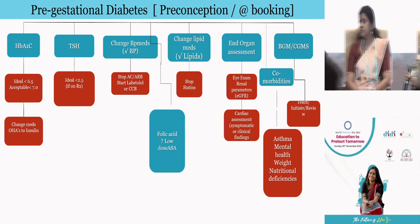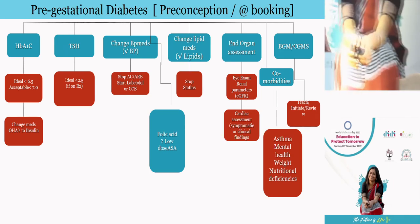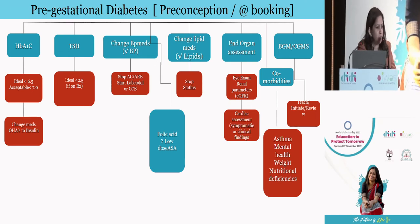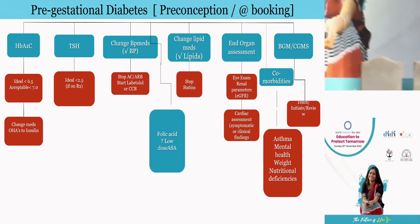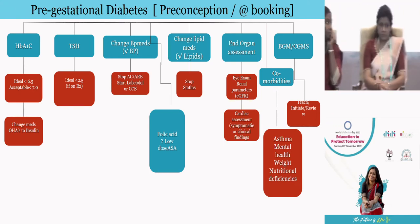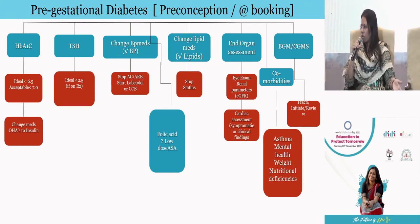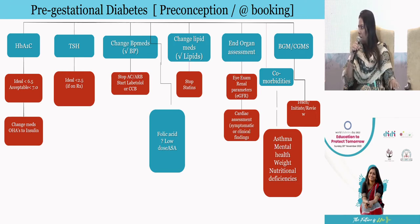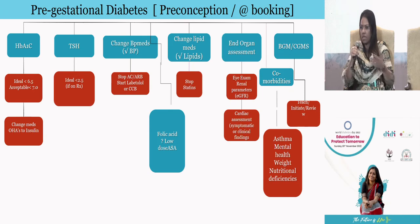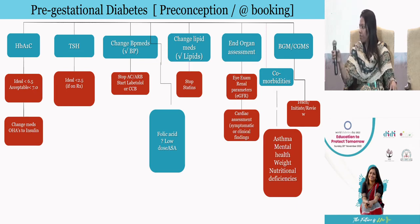Regarding hypothyroidism, which coexists with diabetes: for those already on treatment, we aim for TSH less than 2.5. For someone not on treatment, the evidence is controversial for subclinical hypothyroidism before pregnancy. If TSH is more than 4, you can treat the lady who is planning pregnancy. During pregnancy we have different guidelines, but preconception, TSH above 4 is the threshold to consider treatment.